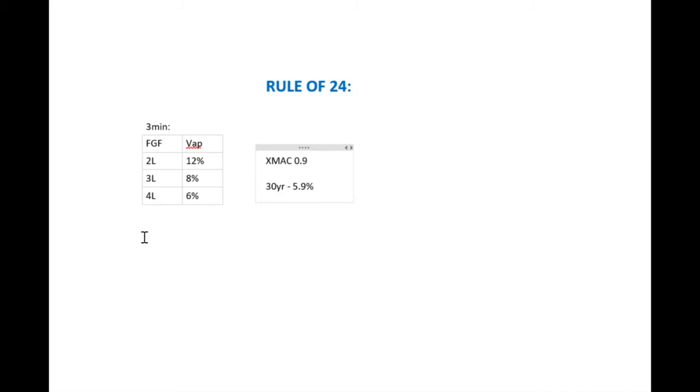So your XMAC is going to be at 0.9 after approximately three minutes. What do we do after that? Now here you need to think of the concept of a swimming pool. We have now filled our swimming pool and now we are going to splash a little bit in it, so the patient is going to use up a little bit of our vapor. All that we are going to do is to replace the use, or to replace the little splashes from swimming in the pool if you want to continue with that metaphor. You're not going to keep your flows and your vaporizer settings that high. You are going to reduce your fresh gas flow.